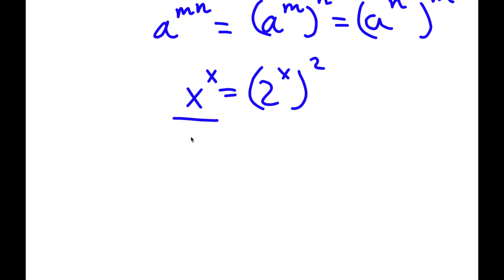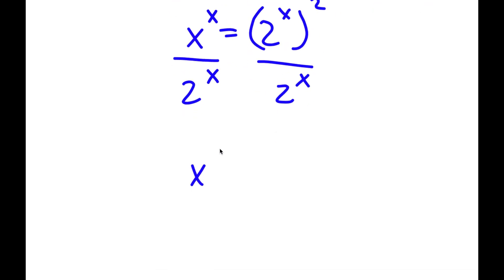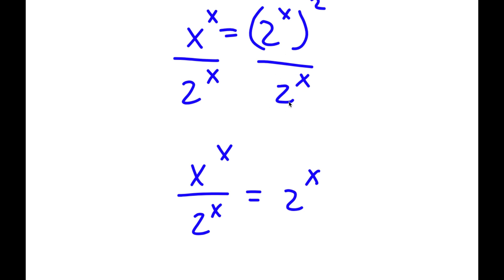Now, if I divide both sides by 2 to the power of x, I get x to the power of x over 2 to the power of x is equal to 2 to the power of x, because 2x squared divided by 2 to the power of x is just 2 to the power of x.